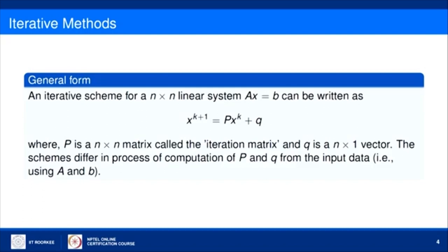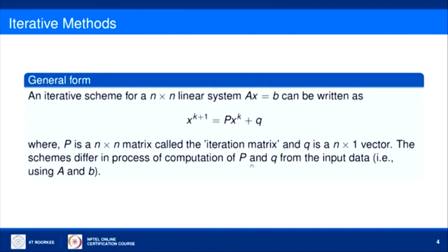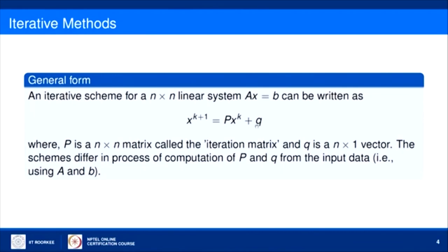A general form of an iterative method for solving an N by N linear system A X equals B can be written as: X_{k+1} equals a matrix P (an N by N matrix) times X_k plus a vector Q (an N by 1 vector). Here the matrix P is called the iteration matrix. Different schemes differ in how the iteration matrix P and vector Q are computed from the input data — the coefficient matrix A and the right-hand side vector B.